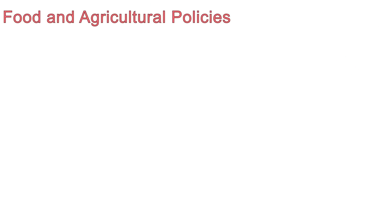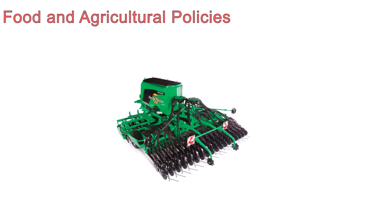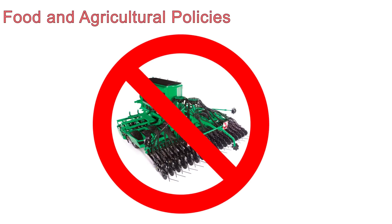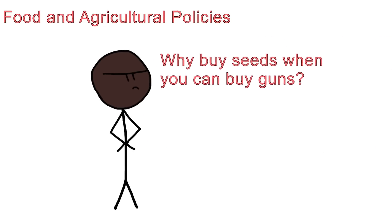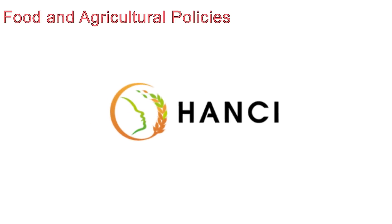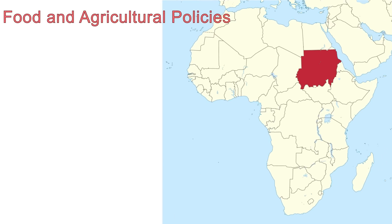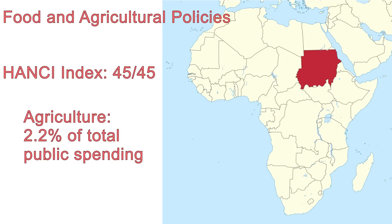Number three is food and agricultural policies. Some countries simply lack the infrastructure or resources to run large farms on which to grow food for their citizens; others simply have no desire to eliminate hunger among their people. One resource called the HANSI Index measures African nations' commitment to ending hunger. Take Sudan, for example, which is number 45 out of 45 — the very worst in terms of commitment — spending only 2.2 percent of its total public spending on agriculture.